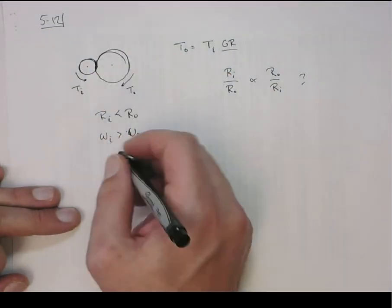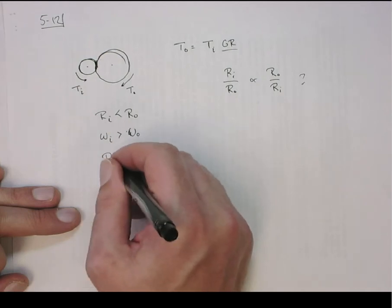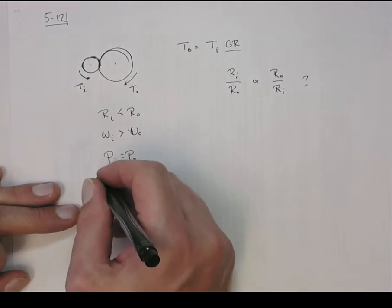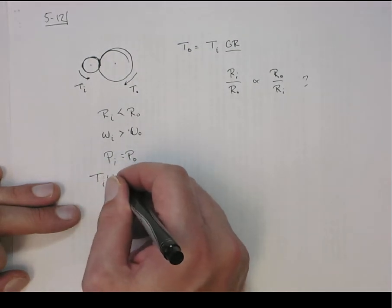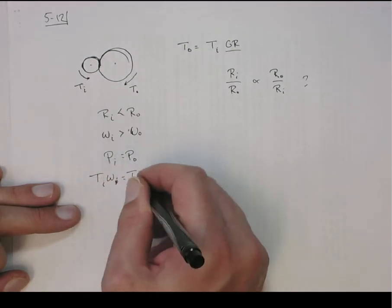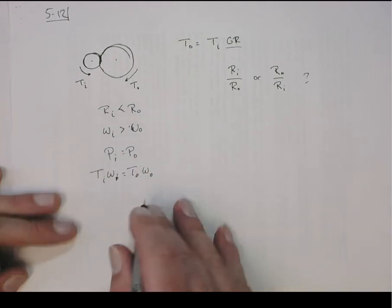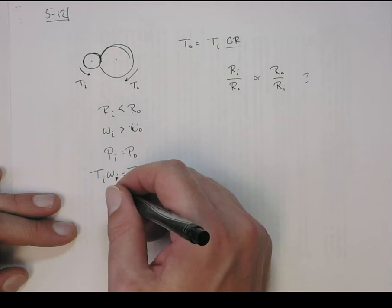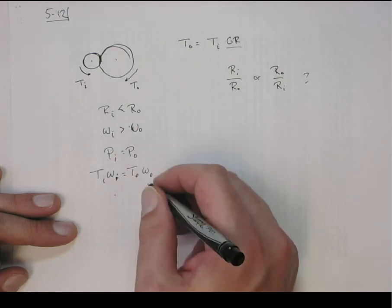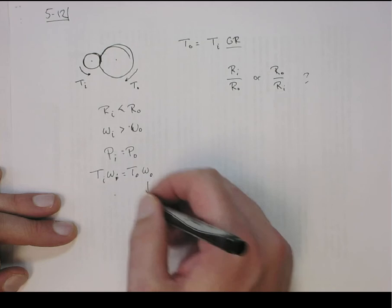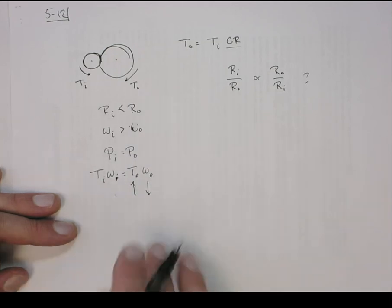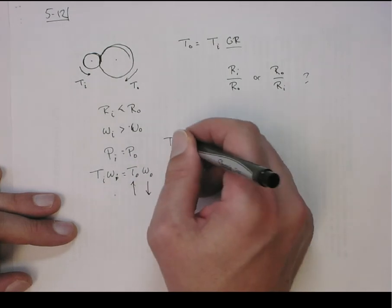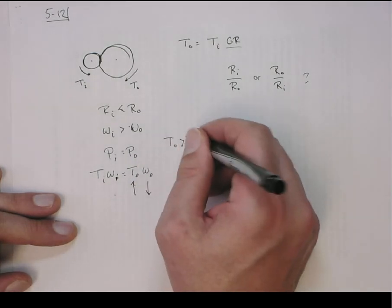And since power is conserved, the input power is equal to the output power, and then the power is the torque times the angular velocity. This tells you that as angular velocity, what I'm saying is that the output angular velocity drops down, so that means the torque goes up, so that they're equal, because this is the inverse relationship. So that means actually the output torque has to be greater than the input torque.